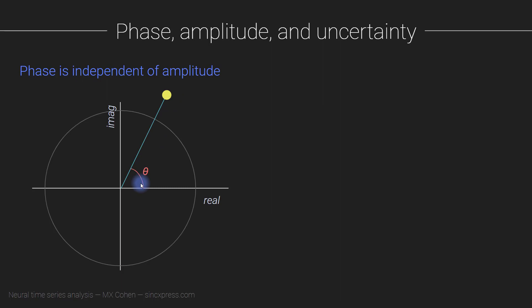The phase here is this angle relative to the positive real axis of the line that connects the origin to the complex Fourier coefficient. You can visualize that this line can be shorter or longer. So this Fourier coefficient can get closer to the origin or further away from the origin, and that doesn't change the angle. This angle is the same regardless of this distance.